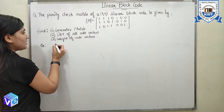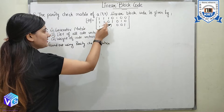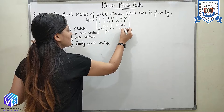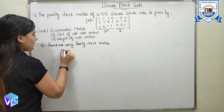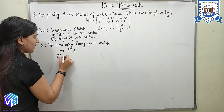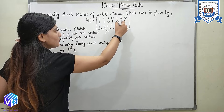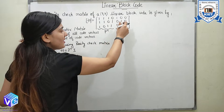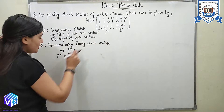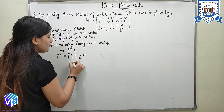The generator matrix can be found using the parity check matrix. From here, you can see the parity check matrix in the form of [P transpose | I]. So H = [P transpose | I]. From here I can identify that the identity matrix I is [1 0 0; 0 1 0; 0 0 1], and the rest is my P transpose, which is [1 1 1; 0 1 1; 0 1 1].